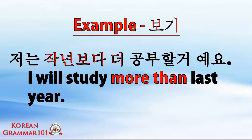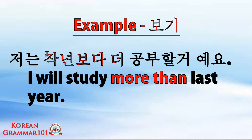Next, an example with a verb: jeonun jeongyun buddha to kongbuhal goyeo. 'Jeo' means I — the first noun attaches a topic marker 는 (nun) because 'jeo' ends with a vowel. We are comparing to last year, 'jeongyun', which takes 보다, then 더 (to/do). 'Kongbuhal goyeo' means will study more. So the sentence means: I will study more than last year.